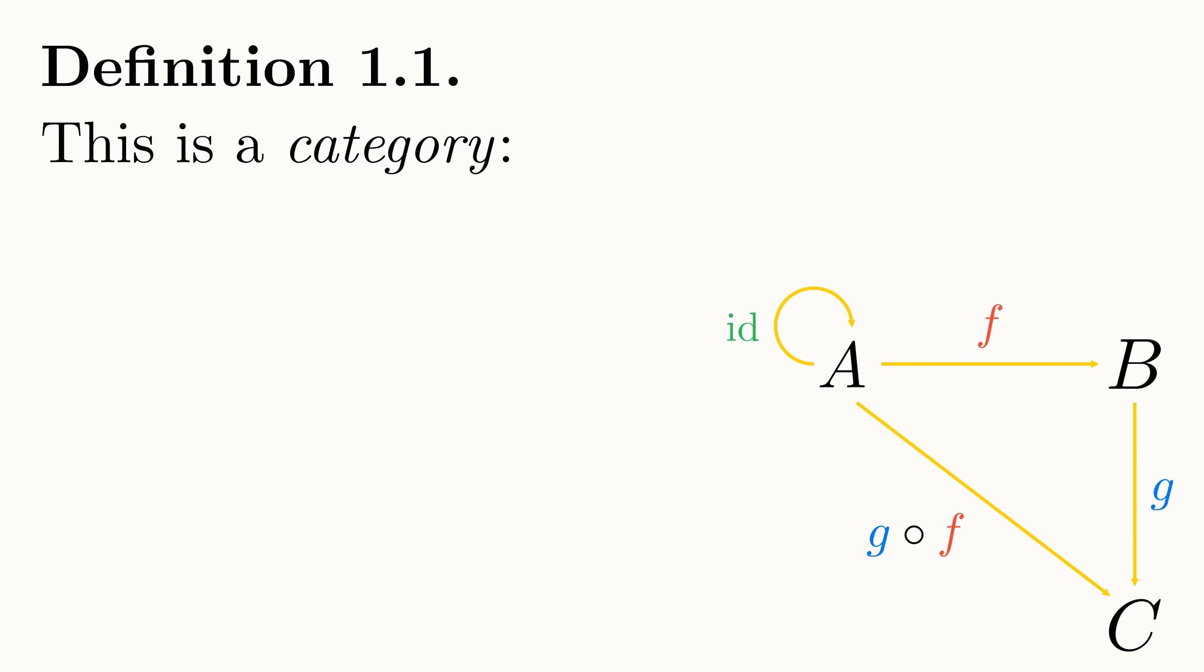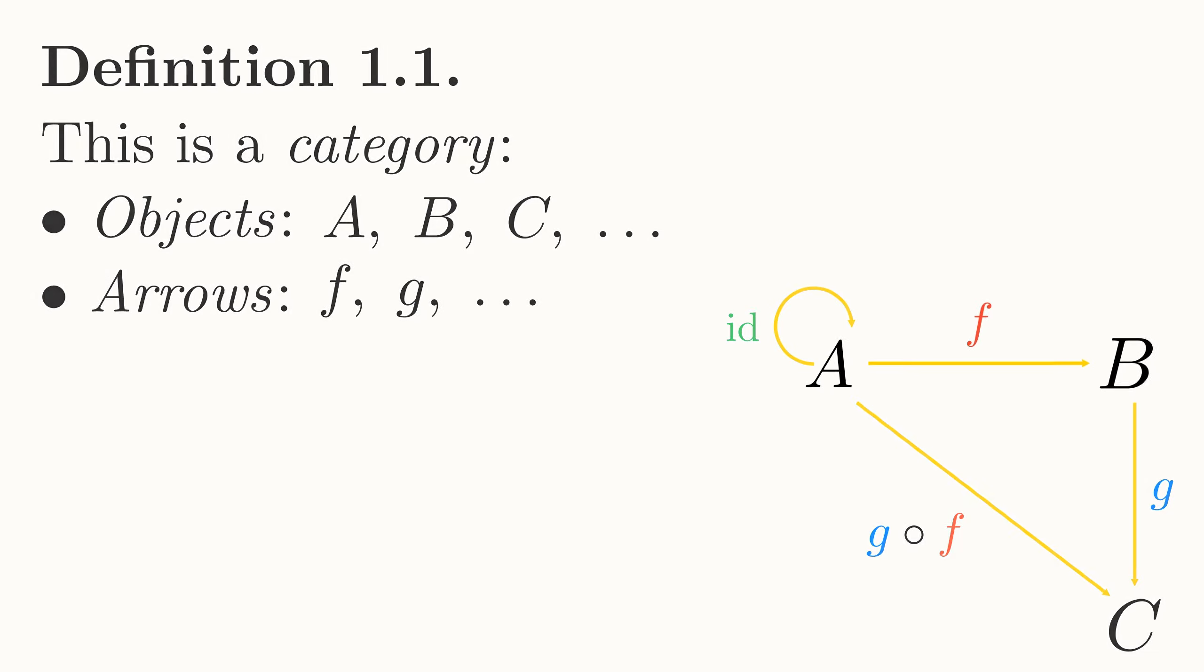We'll say that a category consists of a collection of objects and a collection of arrows. For any arrow in our category, let's call it f, we know that it must start and end at an object. We'll call the starting object the domain of f, written as dom f, and the ending object the codomain of f, written as cod f. We normally write the domain and codomain for an arrow after a colon, with a little arrow going from the domain to the codomain.